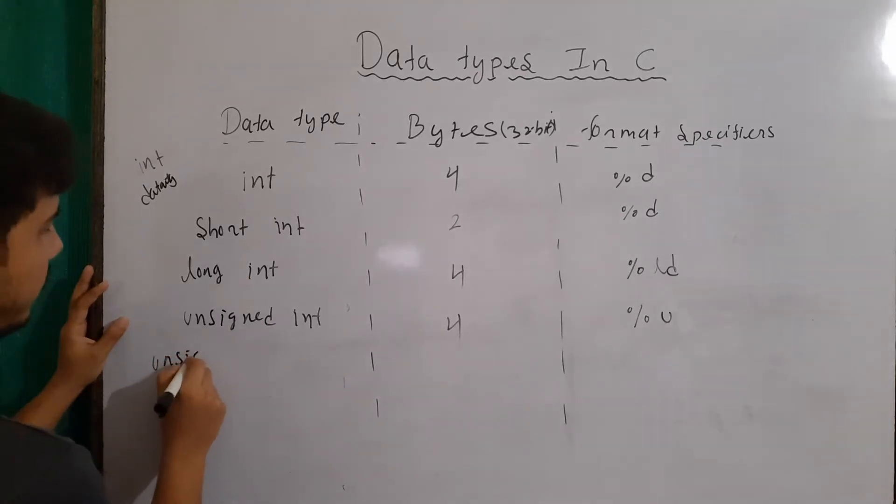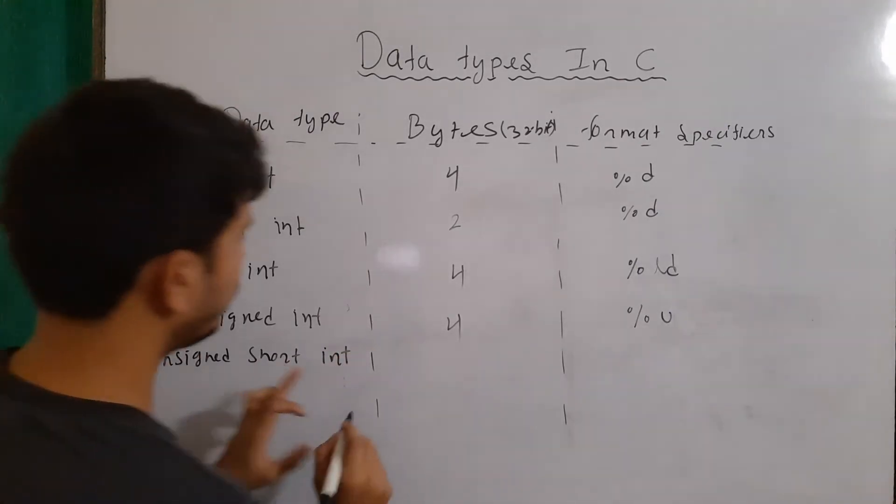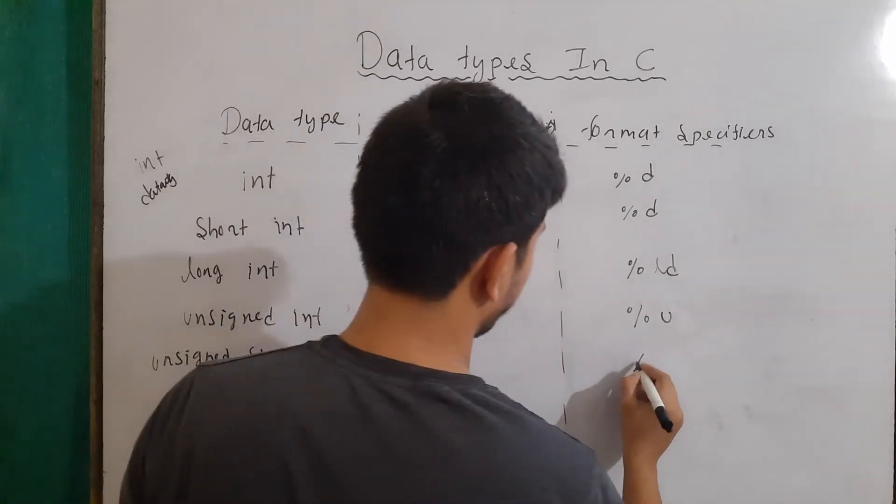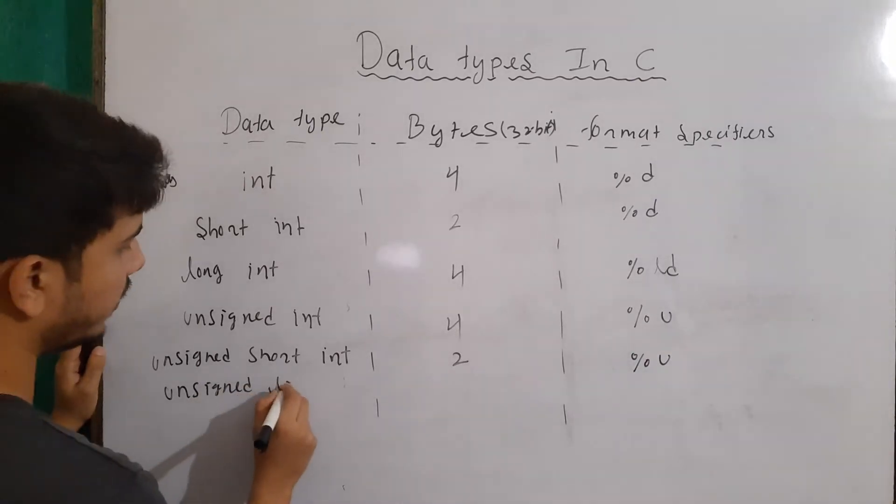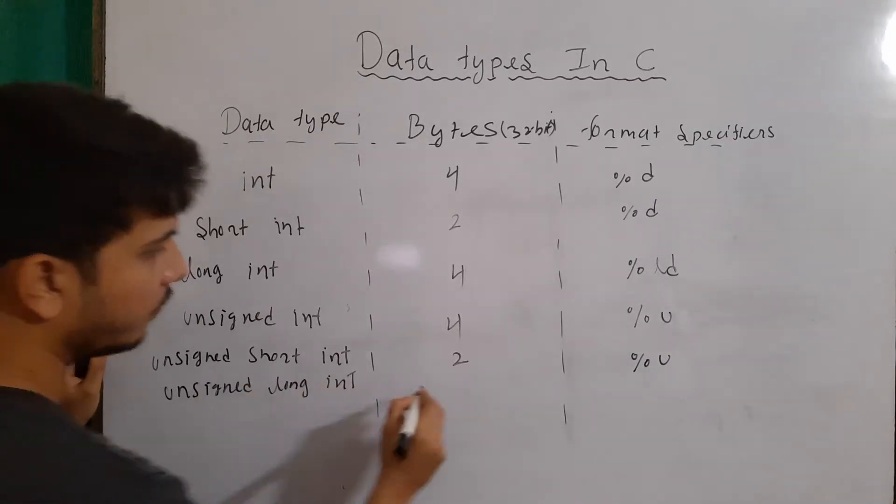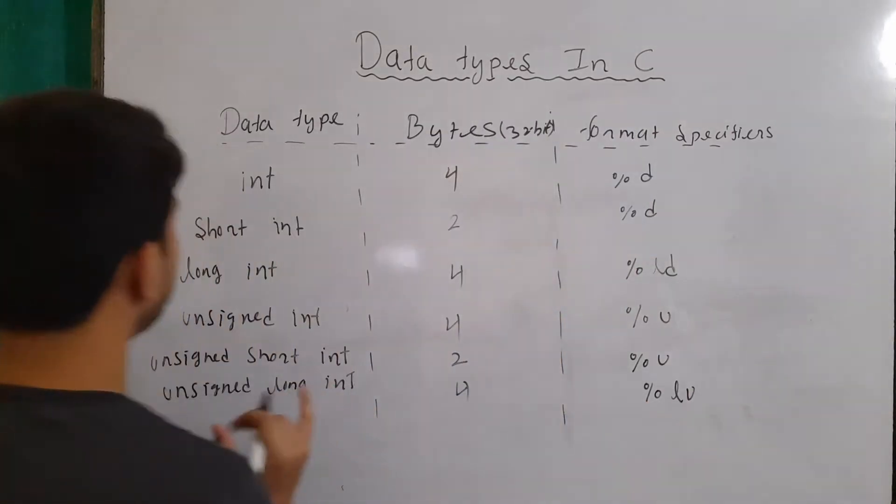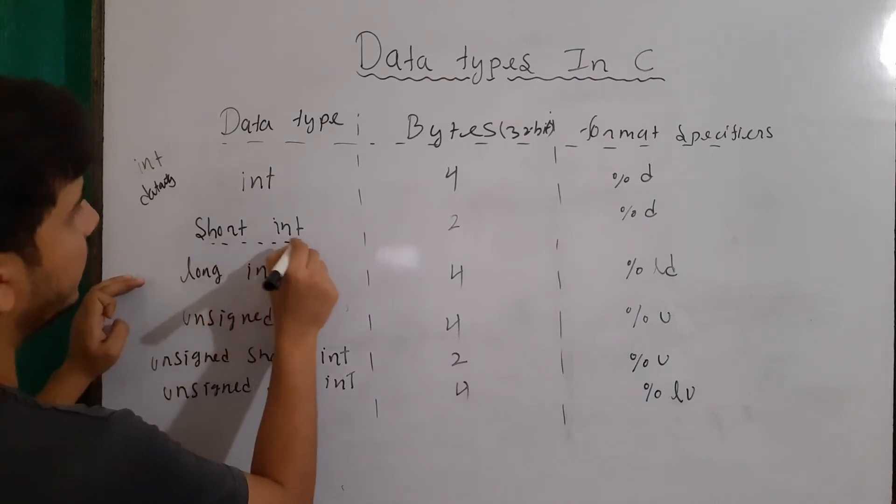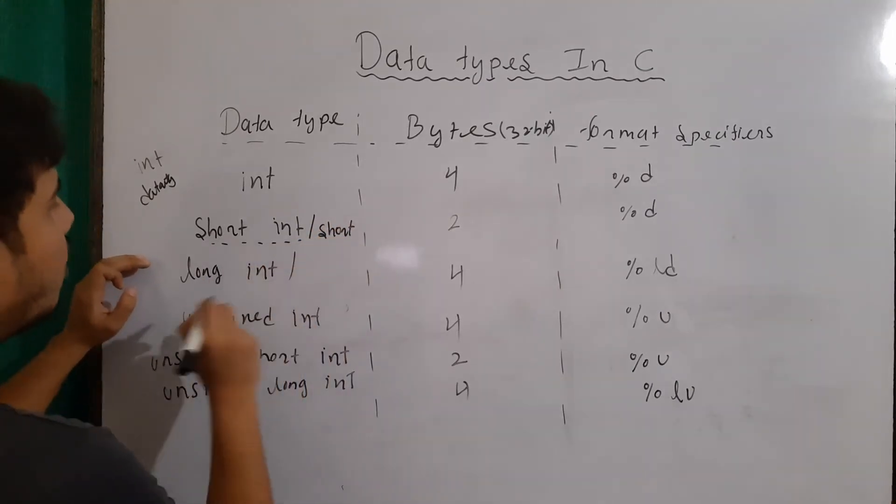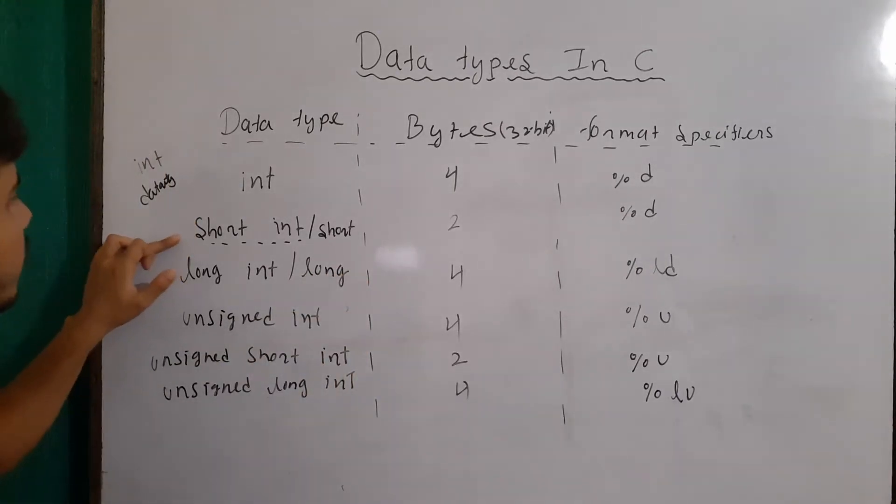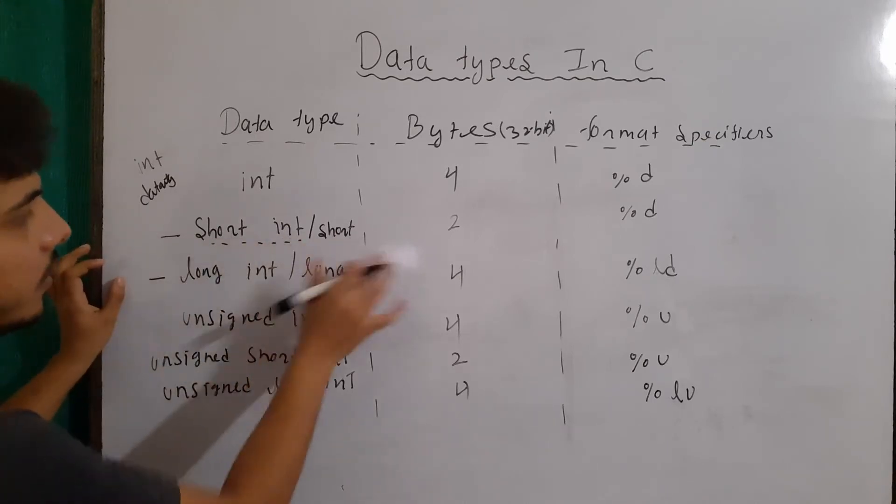Then we have unsigned short int. For that the byte will be 2 and it will be represented using %u. Then unsigned long int. For it size will be 4 and it will be represented with %lu. Now, one thing to note here is that short int can be replaced by simply writing short. Similarly, long int can also be replaced with long. And since I am not writing here anything, it will be considered as signed long int, signed short int, or signed short.